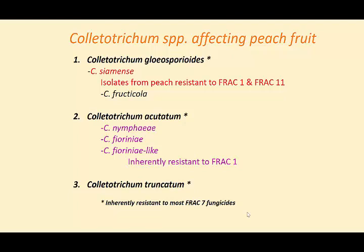Under gloeosporioides, we have C. siamense — some isolates were resistant to FRAC1 and FRAC11. C. fructicola showed no detected resistance. Under the acutatum complex, there were three species; notably, Colletotrichum acutatum species are inherently resistant to FRAC1, and Colletotrichum truncatum and all Colletotrichum species are inherently naturally resistant to most FRAC7 fungicides. The control of anthracnose is really complicated — by involvement of multiple species and differential sensitivity in different Colletotrichum species.